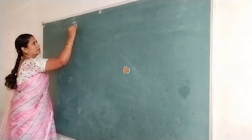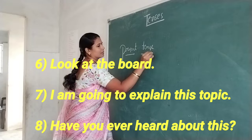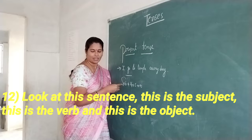You don't need to be silent when you write on the board — you can elaborate about the topic while writing. For example: 'Look at the board. I am going to explain this topic. Have you ever heard about this? Pay attention everybody. How to use this word in a sentence? I have written one example sentence here.'